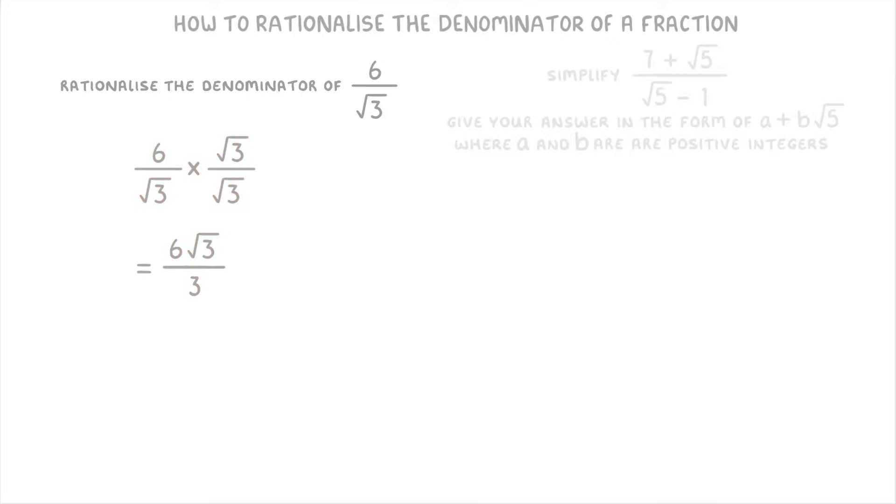And because it's a fraction, you should always see if it can be simplified at all, which this one can, by dividing top and bottom by 3, to get 2 root 3 over 1, or just 2 root 3.